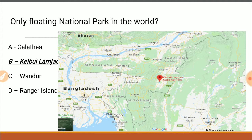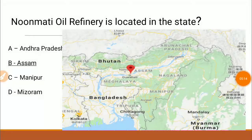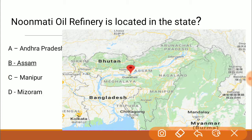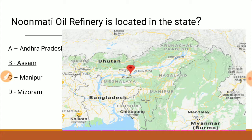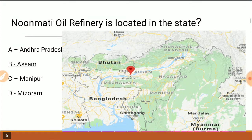The Nunmati oil refinery is located in the state of Assam, quite near to Guwahati. Assam is well known for oil excavation and extraction. The country's oldest oil field is located at Digboi in Assam, in the Dibrugarh region.